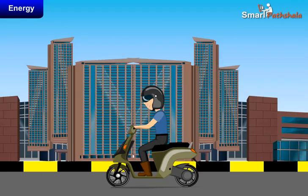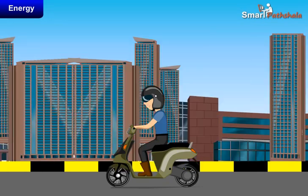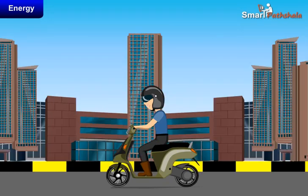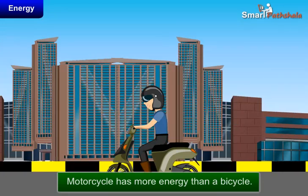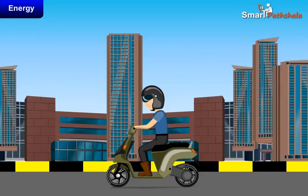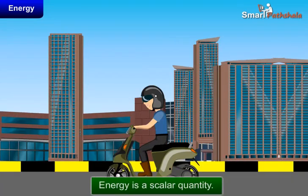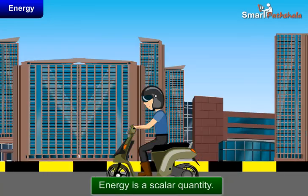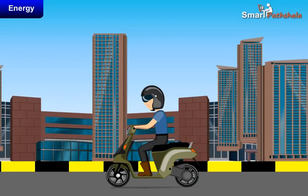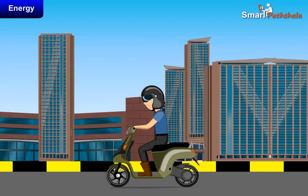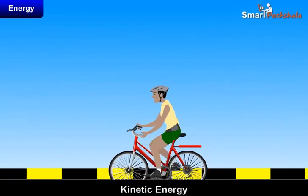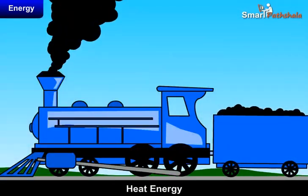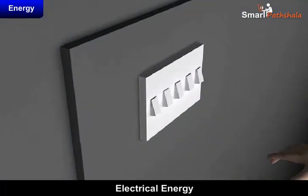Such as a motorcycle has more energy than a bicycle. Energy has only magnitude, so we can say that energy is a scalar quantity. The SI unit of energy is Joule (J). There are many different forms of energy in our environment, such as potential energy, kinetic energy, heat energy, and electrical energy.